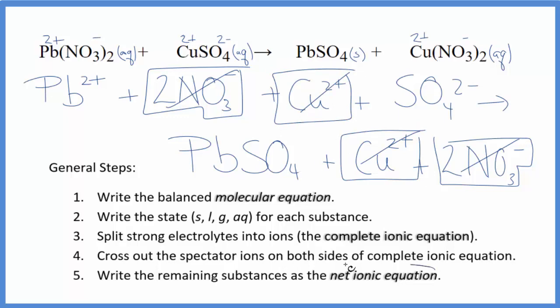But what's left, that's the net ionic equation for Pb(NO3)2 plus CuSO4. I'll clean it up and write the states. We'll have our net ionic equation.